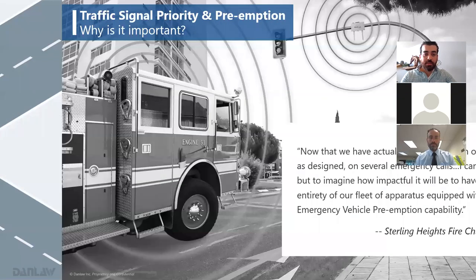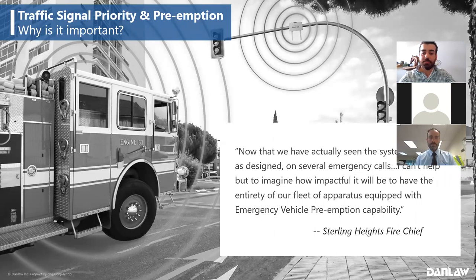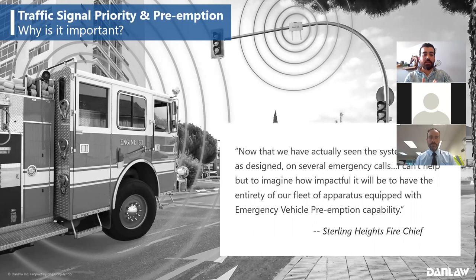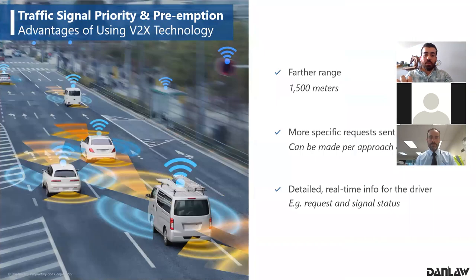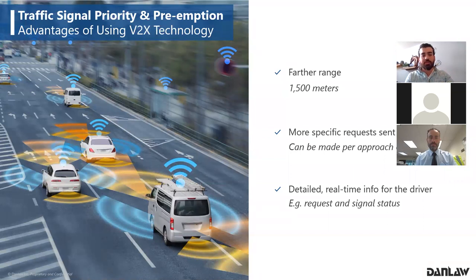In one of our previous pilots, we heard great testimonies from the fire chief — the V2X preemption system served them very well, and they're looking to retrofit the entire fleet with the technology. Some advantages of V2X technology include a range of up to 1,500 meters — farther than most technologies, and though similar to IR in range, radio can go through obstructions unlike IR. Requests can also be sent per approach.